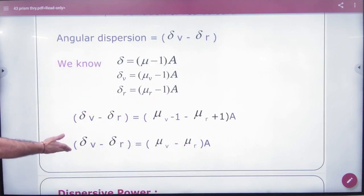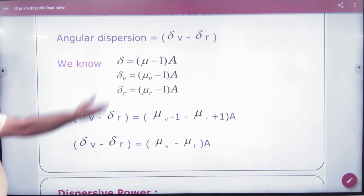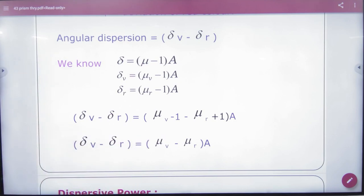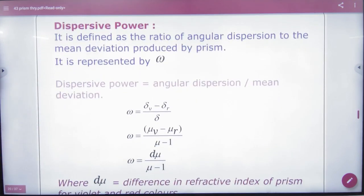So write angular dispersion formula: the first formula in the form of delta, and the second formula in the form of mu violet minus mu red into A. So two formulas for angular dispersion. Next is dispersive power.